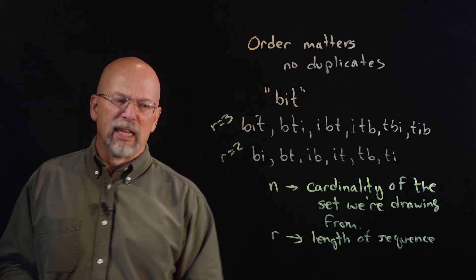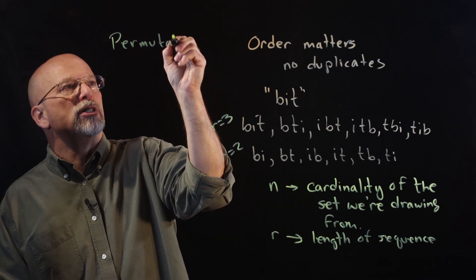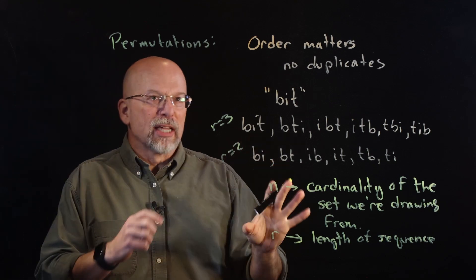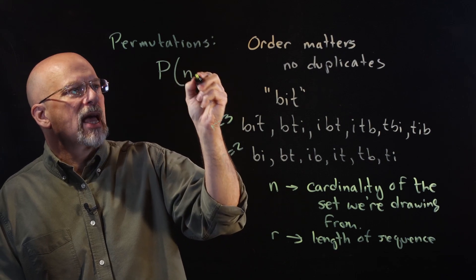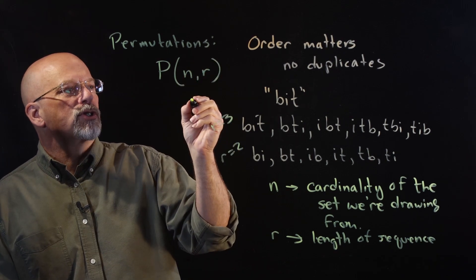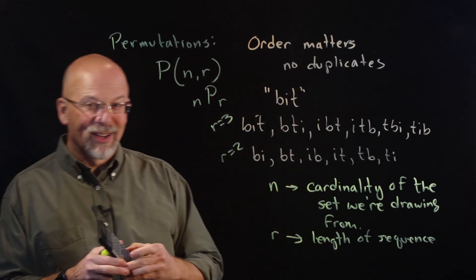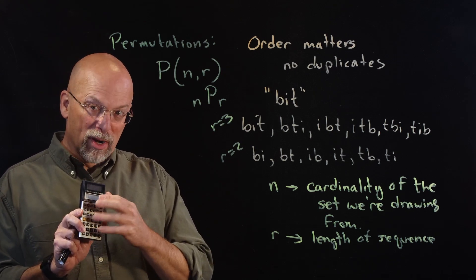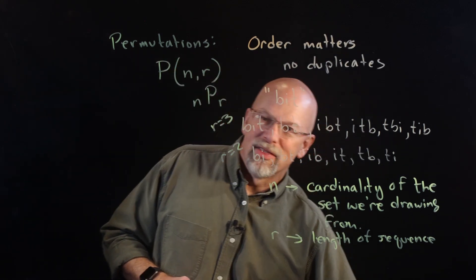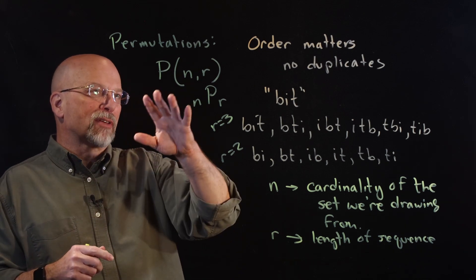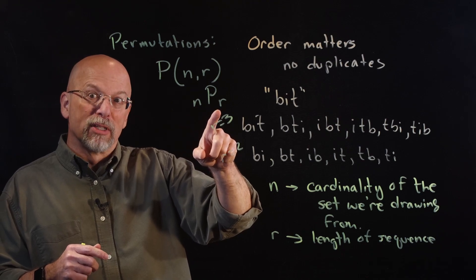Let's talk about the nomenclature for permutations. There are two ways to write it: P(n, r) within parentheses, or nPr. If you look at your calculator, many calculators have an nPr button that calculates the permutations based on the size of the set and the number of elements in the sequence.